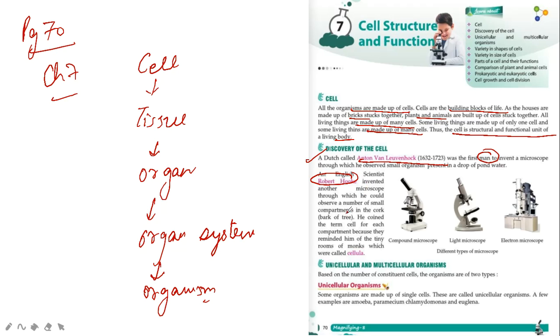Now what is bark of tree? Any tree has a brown colored skin. Under it, particles are found. We call this bark of tree. What did he do? He coined the term cell.